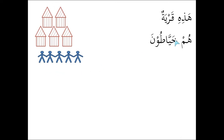As you can see, the word Khayyatun is a Sound Masculine Plural. How can you tell? Well, it's got the characteristic pattern: the final letter of the original word Khayyat has a Dhamma, then it's followed by Waw with a Sukun, and an Un with a Fathah. That's the typical pattern.